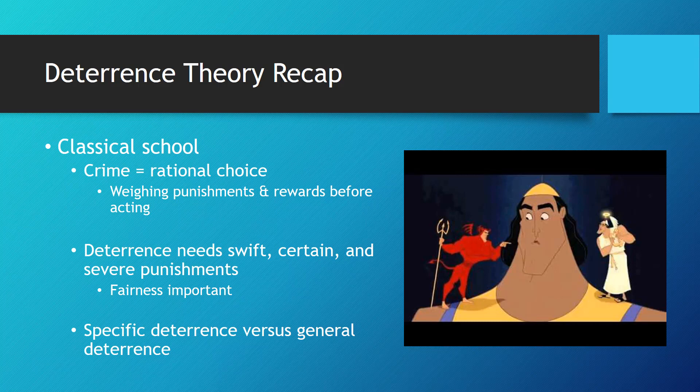In order to deter criminal behavior, Beccaria argued that punishments must be swift, certain, and severe, meaning that the offender must expect punishment to occur soon, every time the behavior is done, and to have a punishment in proportion with the behavior. Remember that Beccaria also maintained that punishments needed to be fair, otherwise they would be seen as tyrannical and the individual would no longer be deterred.